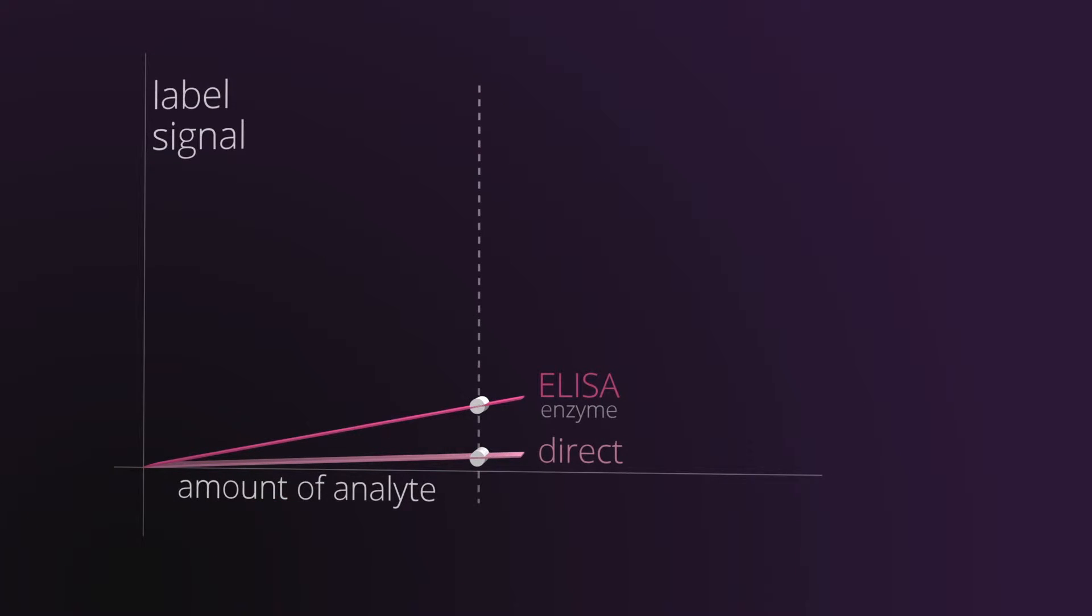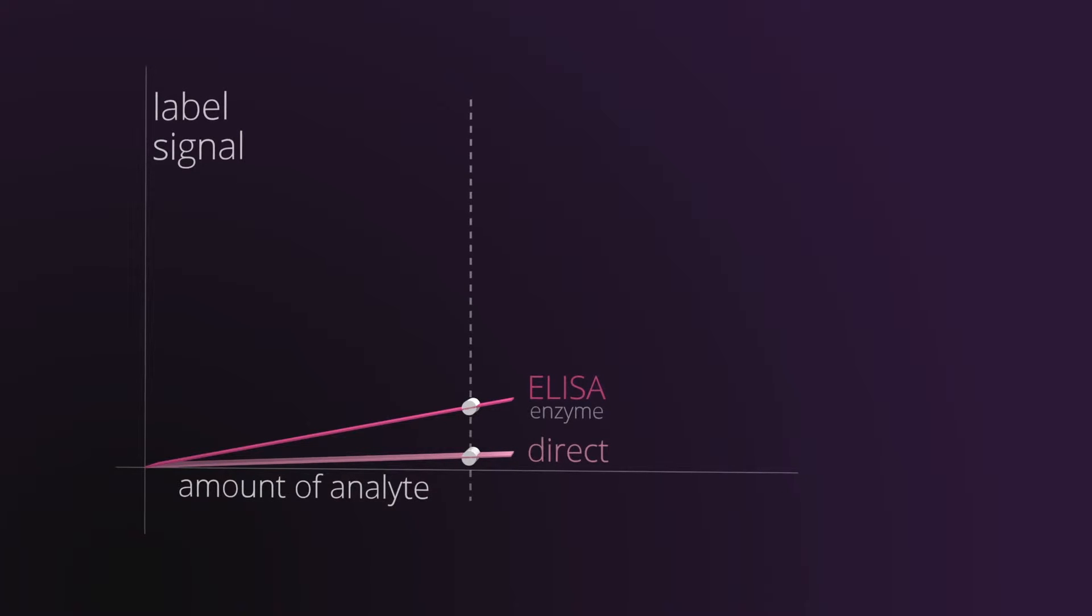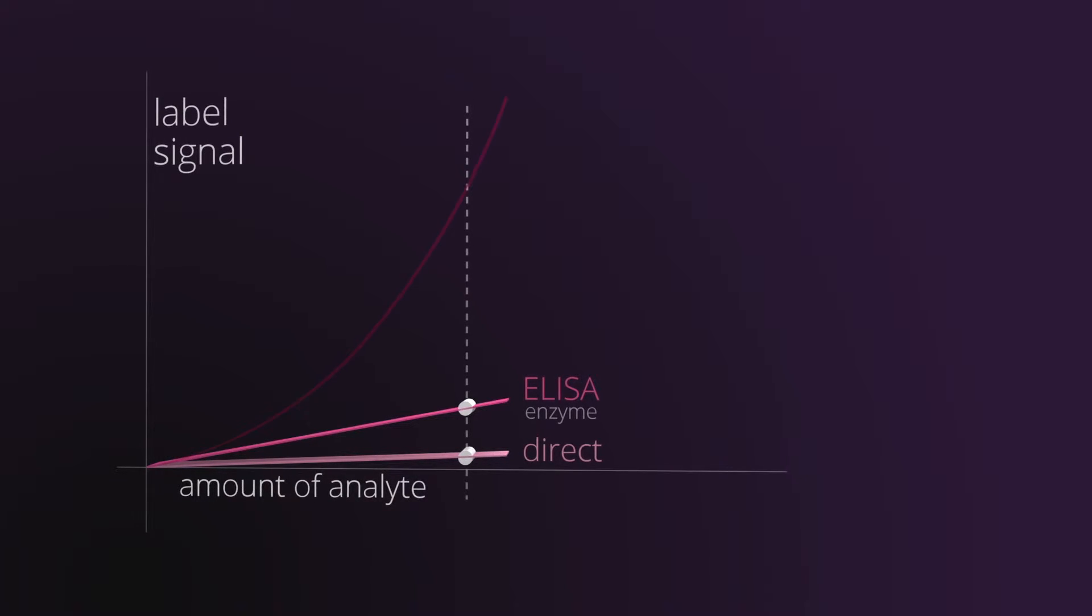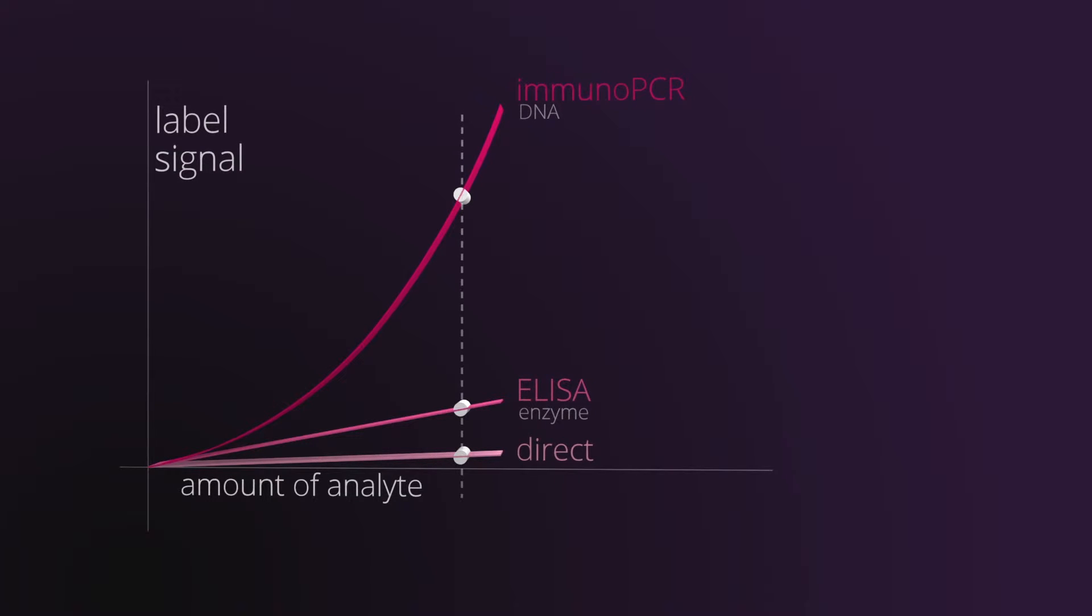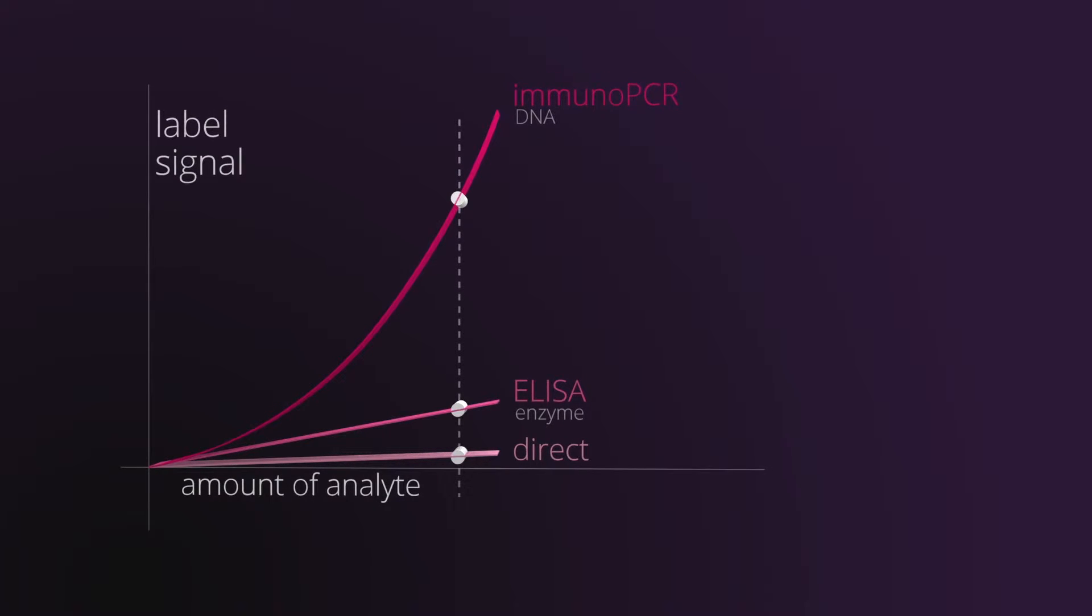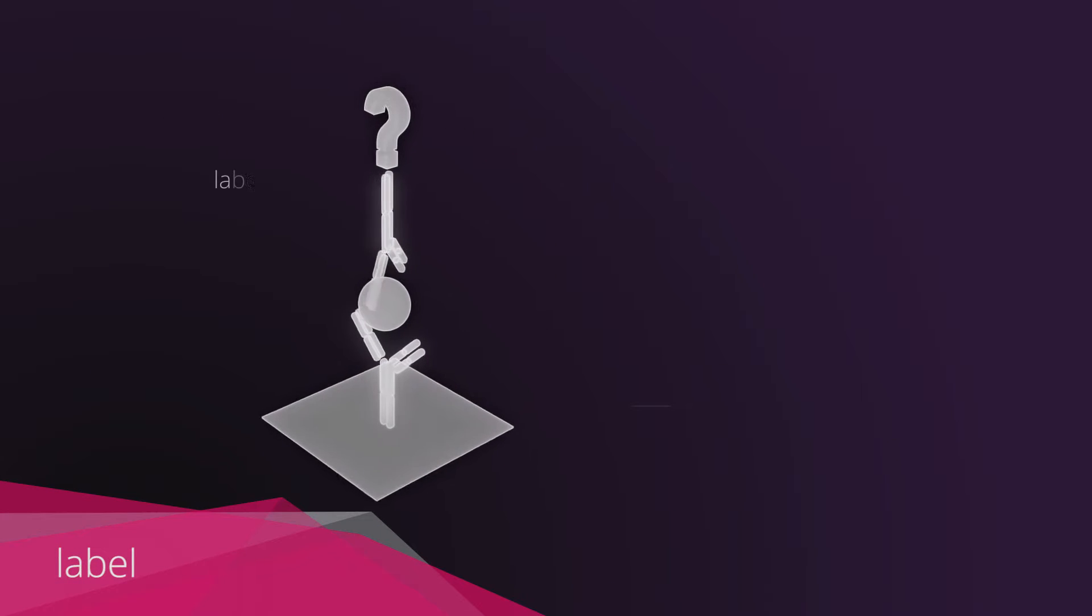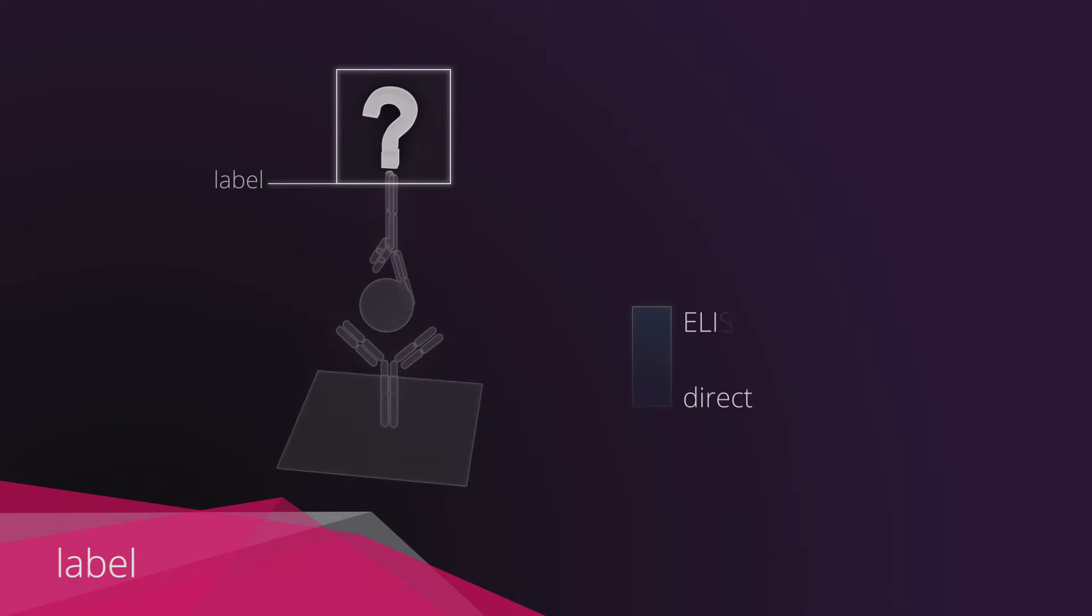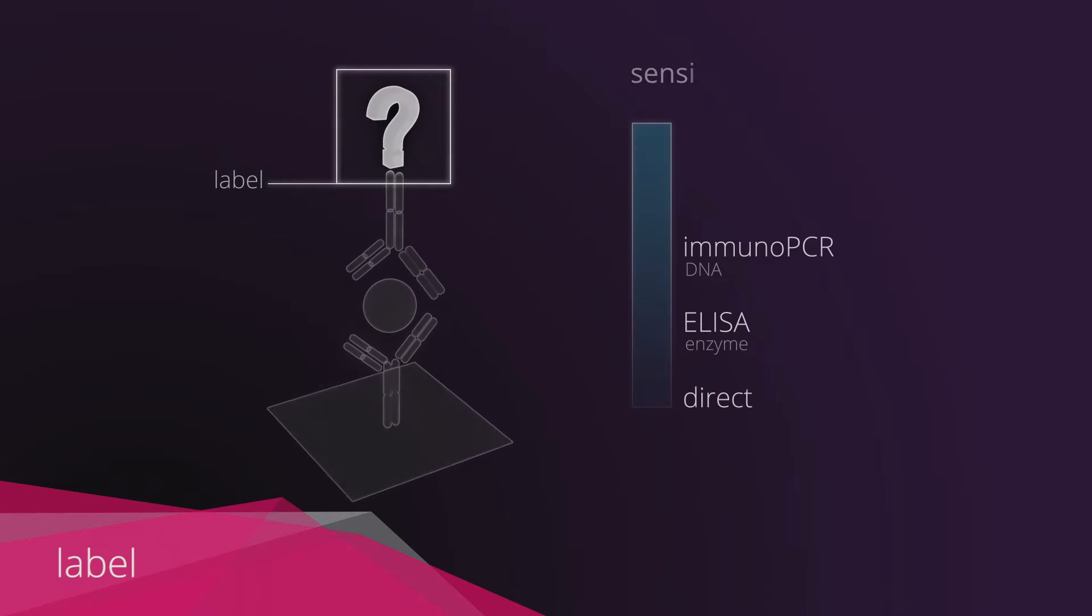The immunoassays have therefore improved in terms of sensitivity, with the introduction of the ELISA technique that uses enzymes as labels and the immuno-PCR that uses DNA chains instead of enzymes. The improvements made to a label which carries out the transduction process lead to a considerable increase of detection sensitivity.